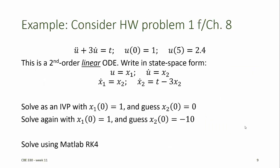Consider this example problem from Chapter 8 of the Methods Text. This is a second-order linear ODE defined as a boundary value problem. We know the value of the dependent variable at 0 and at 5. First we write this in state space form. Since u is our dependent variable, we'll use x as the state variable. x1 equals u and x2 equals u-dot. The derivative of x1 is x2, and the derivative of x2 is found by solving the defining equation for u double dot.